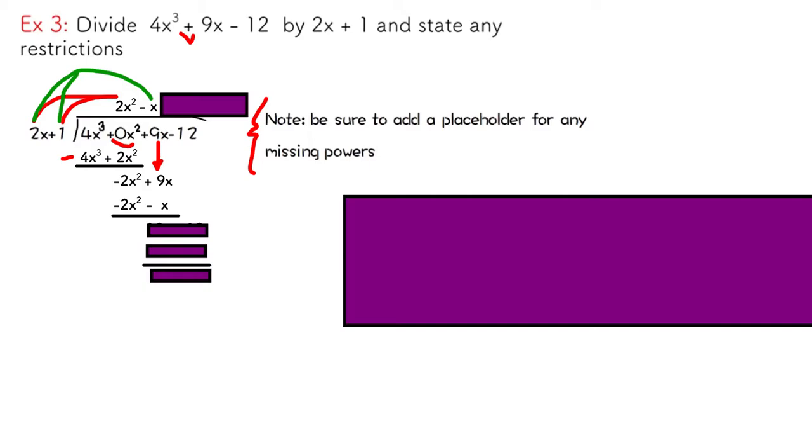When I do my subtraction here, I've got to be very careful, because I do have some negatives that I'm working with. So I put the second expression in brackets, and my first two terms cancel out, as always. I do have 9x minus negative x. That's the same as adding an x. So I should end up with 10x.